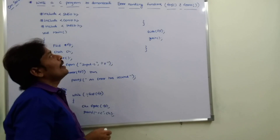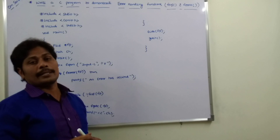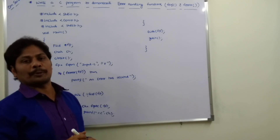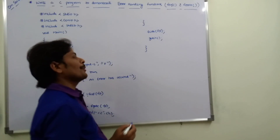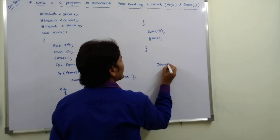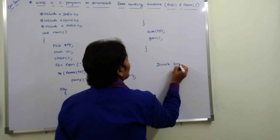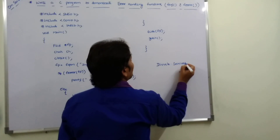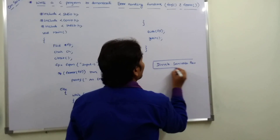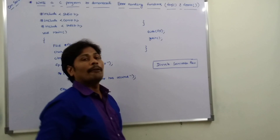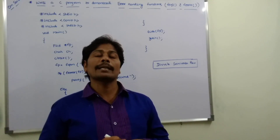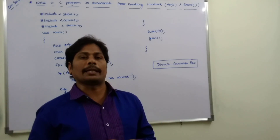So this is how error handling functions feof() and ferror() are used in a file handling program in C. Thank you for watching this video. If you like this video, please subscribe to my channel and forward this video to your friends in the same college or other colleges. Thank you.